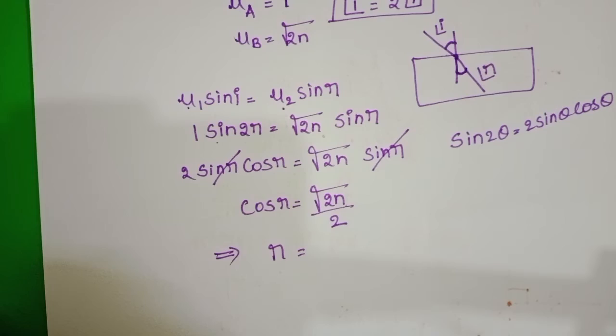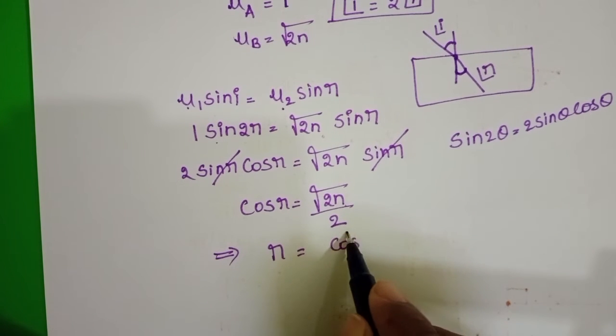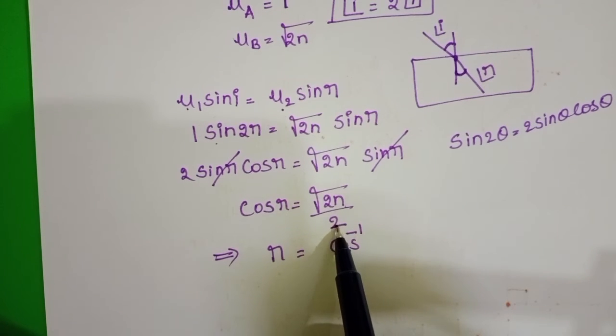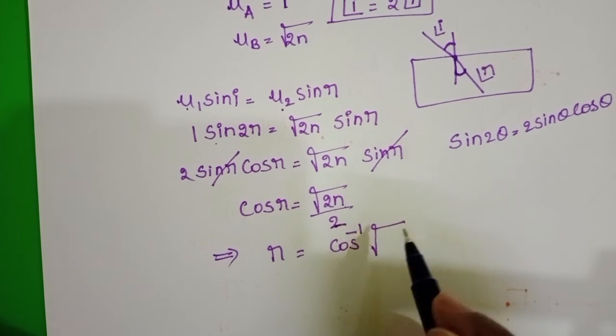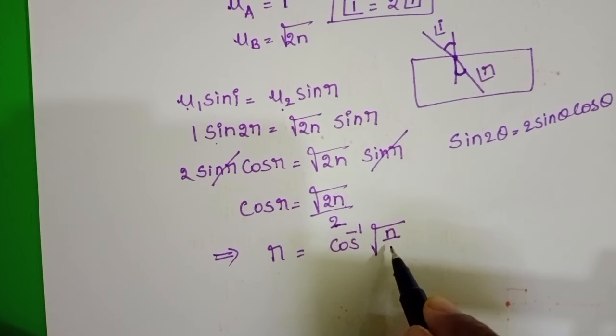From this, angle of refraction r = cos⁻¹(√(2n)/2). Taking 2 into the square root, it becomes r = cos⁻¹(√(n/2)).